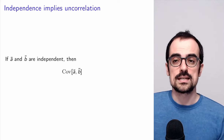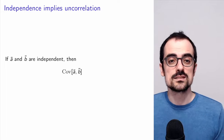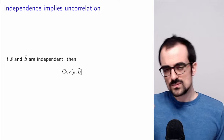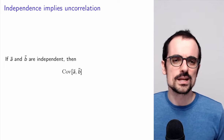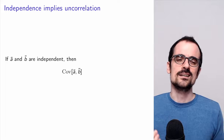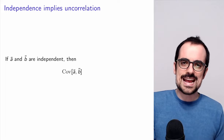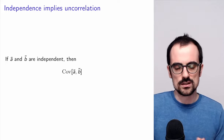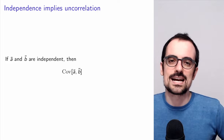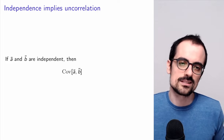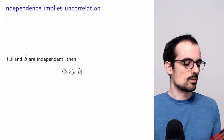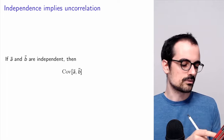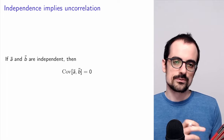It turns out that independence implies uncorrelation. Independence is the lack of any dependence between variables, while zero correlation is the lack of linear dependence. So when we look at the covariance between two independent random variables, it equals zero.